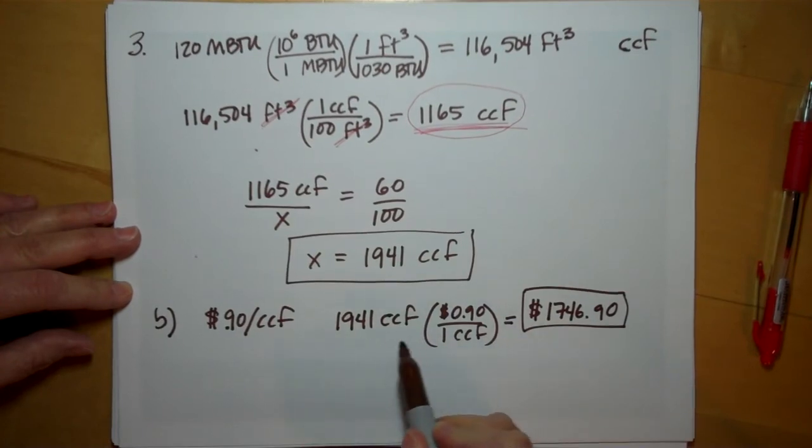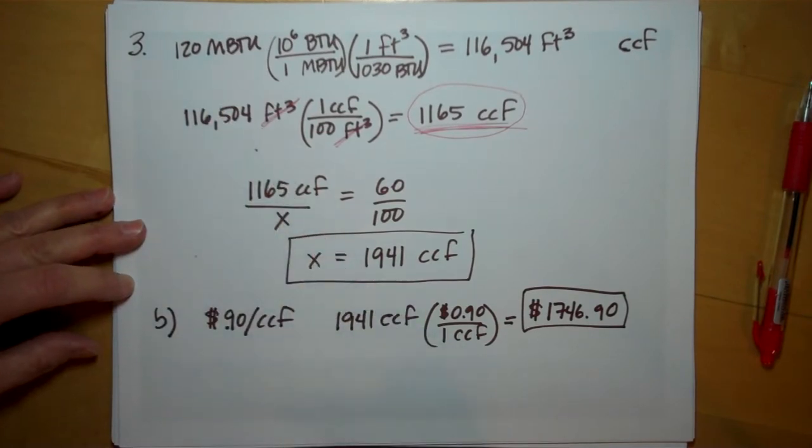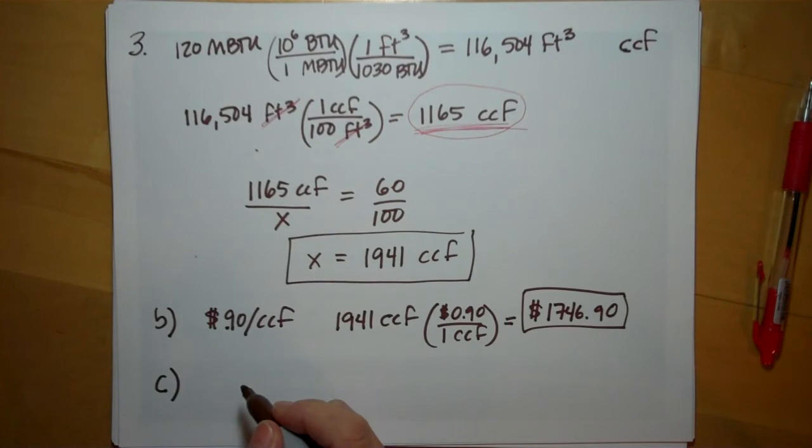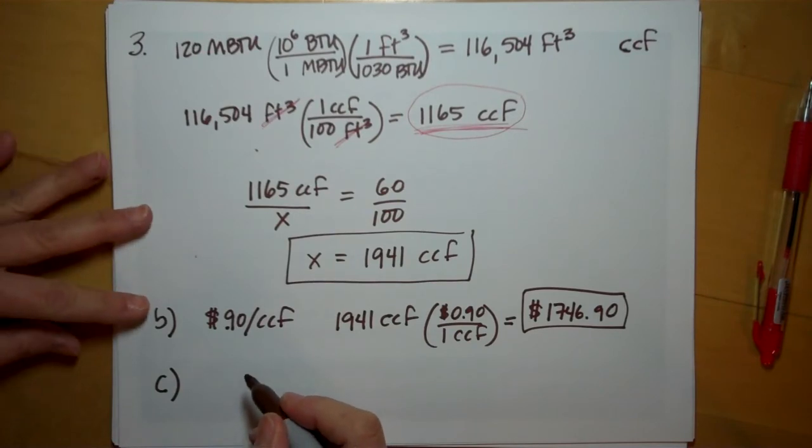More if our efficiency was even worse. More if we need even more energy. Question C, using the hot water heating requirements for a bath from question 1C. How many hot baths would this energy supply in one year?